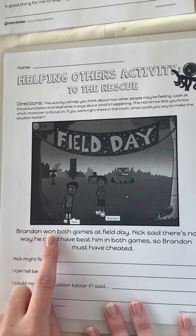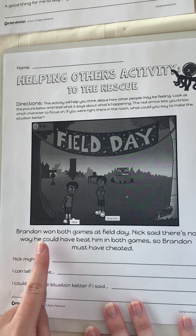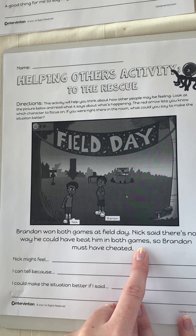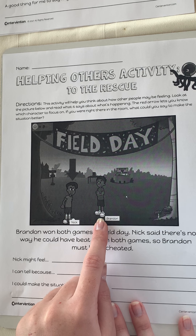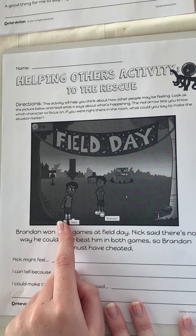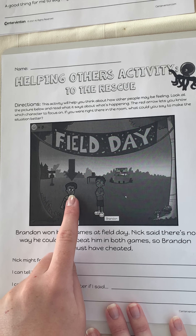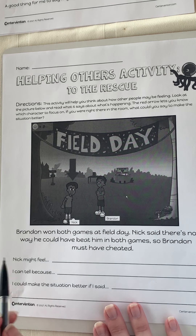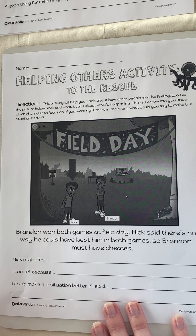It says Brandon won both games at field day. Nick said there's no way he could have beat him in both games, so Brandon must have cheated. Brandon won two games at field day, and Nick said Brandon must have cheated. By looking at this picture and the scenario, Nick might feel — I'm going to say that he feels upset. He lost two different games at field day, and it seems to me that he is upset.